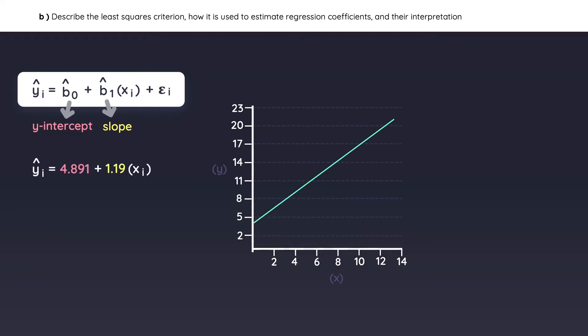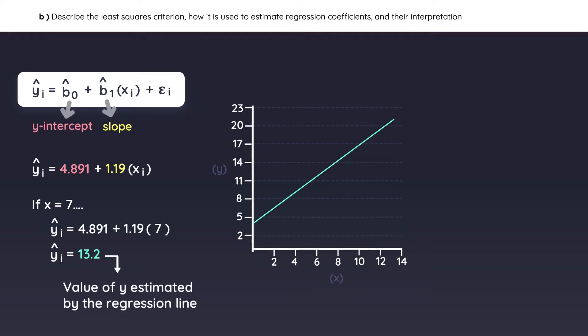Here is the actual equation for the line in this example. According to this regression, if we plug in X equals 7 and solve for Y, the estimated value of Y according to the regression line is 13.2. Let's confirm with the scatter plot — when X equals 7, the estimated value of Y according to the regression line is 13.2.